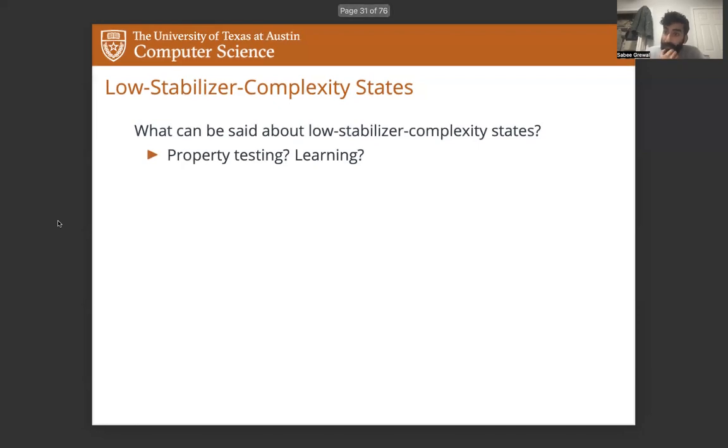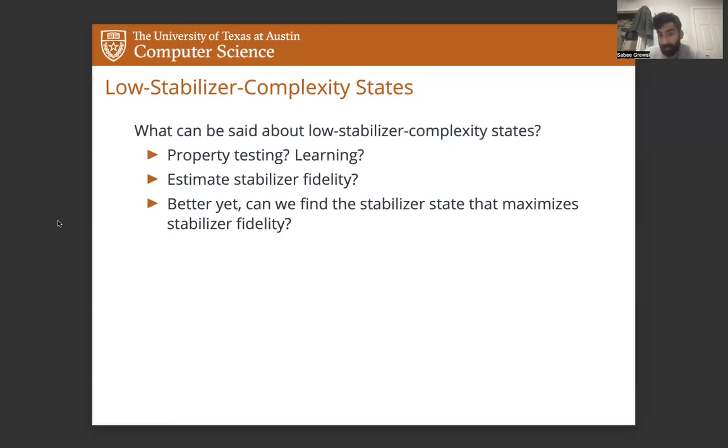Specifically, can we property test and learn this class of states? Can we estimate the stabilizer fidelity of an unknown state? Or better yet, can we find the stabilizer state that achieves the stabilizer fidelity? And it turns out we actually don't really know much. We don't have any answers to these questions. The best known algorithms are just brute forcing over all two to the N squared stabilizer states. And so it's possible that these problems are all intractable.